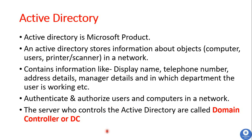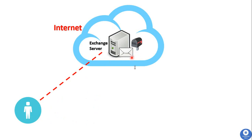The server that controls Active Directory is called the Domain Controller, or DC. For example, let's say we have a user trying to access an Exchange server for emailing purposes. When the user tries to access this server, they need to provide their login credentials — that is, username and password.